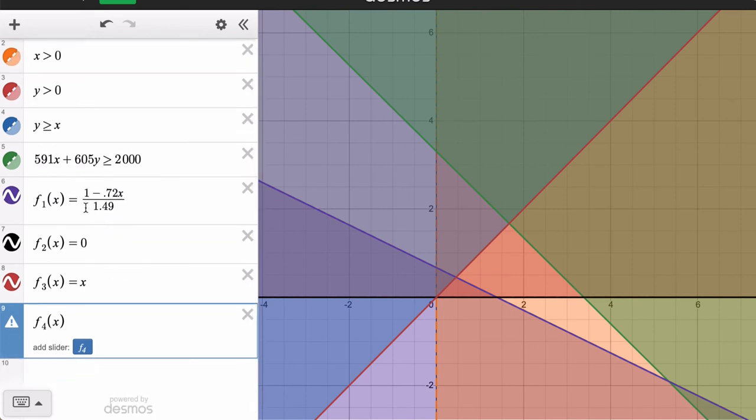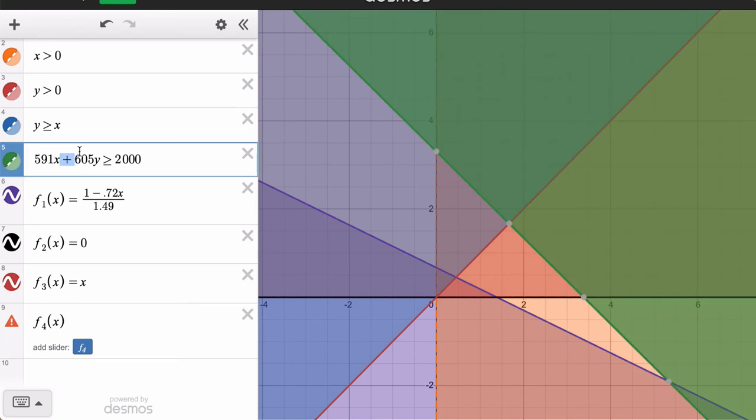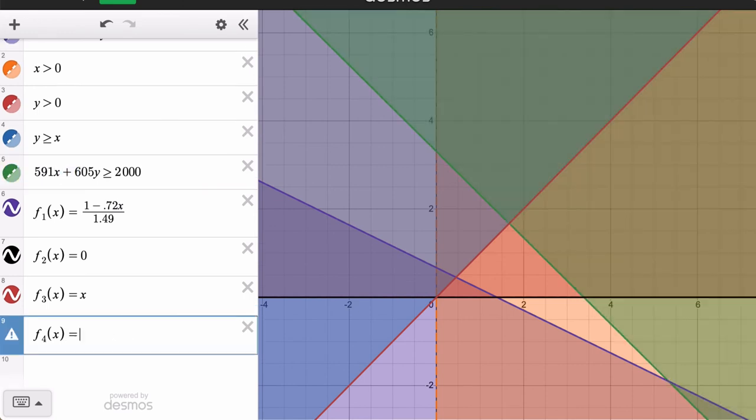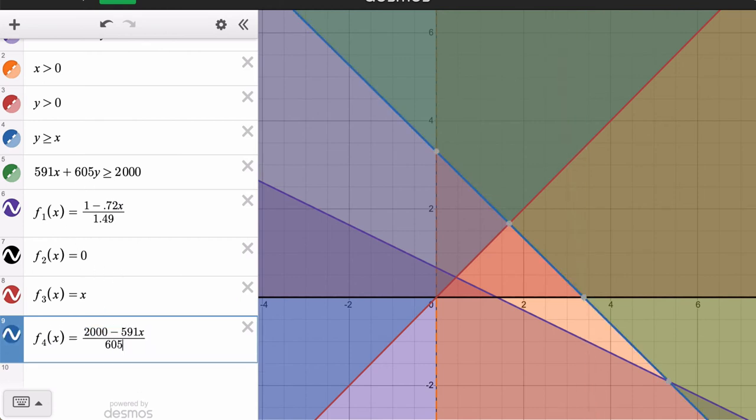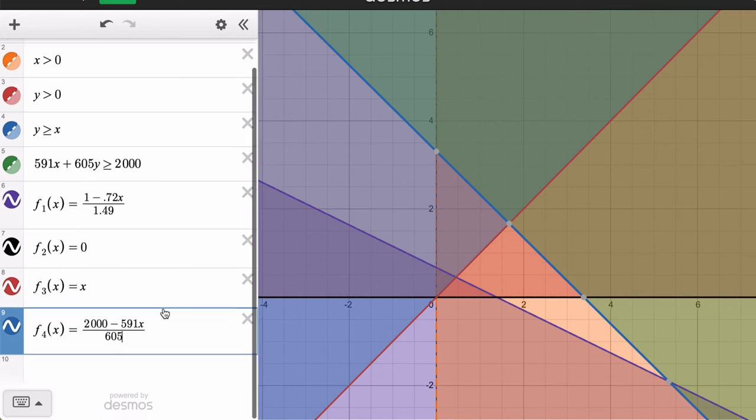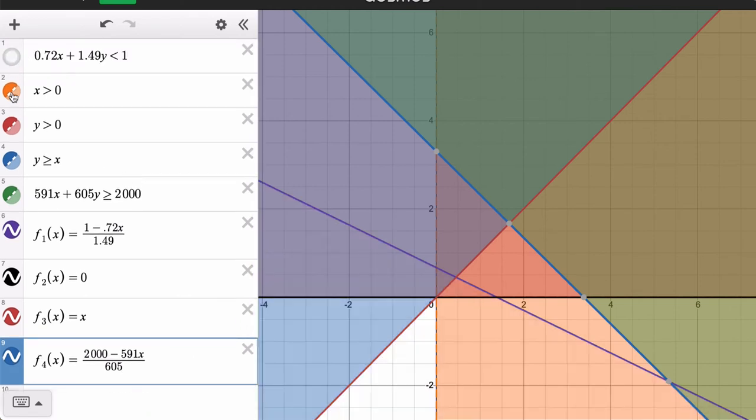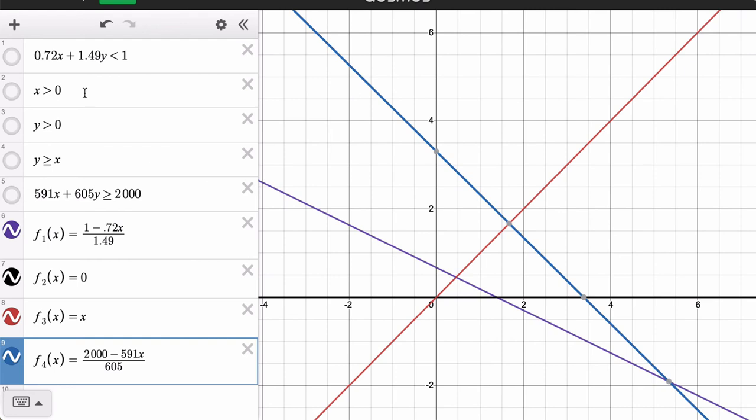This vertical line right here, that region. So we'll come back to that. But anyway, this one I want to isolate y. So I want to subtract 591x from 2,000. So 2,000 minus 591x. And then I want to divide the whole thing by 605. Okay. So now let me hide these equations.